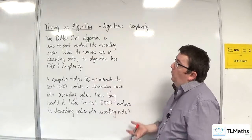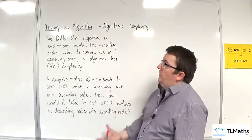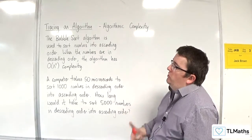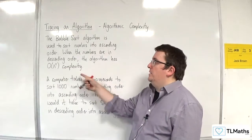So this time, the bubble sort algorithm is used to sort numbers into ascending order. When the numbers are in descending order, the algorithm has order of n-squared complexity.